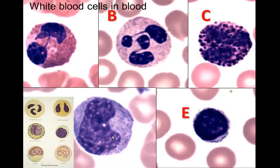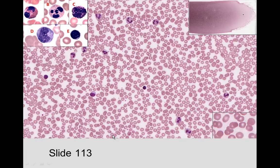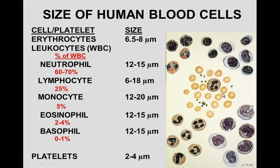Looking at slide 113 with the atlas as reference, we can identify neutrophils, a monocyte, and lymphocytes. Looking at human blood and relative sizes, red blood cells are the smallest. Among white blood cells, neutrophils, monocytes, eosinophils, and basophils are about the same size and larger than lymphocytes, except when you have a large lymphocyte, which can be quite large.